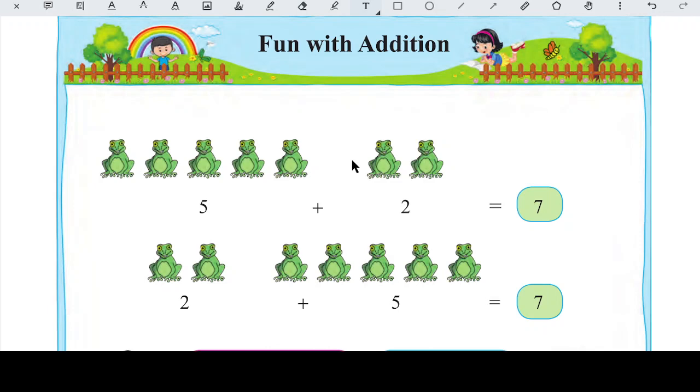Jo hum roz shayad karte hain, you know, par humein yeh nahi pata hota hai uska naam kya hota hai. So angels, aaj hum seekhenge ki jab 2 cheezein humare paas hoti hai to use kya kehte hain. Suppose agar aapke paas 2 chapati hai, okay, you have 2 chapati and your brother, aapka bhai, uske paas bhi 2 chapati hai.